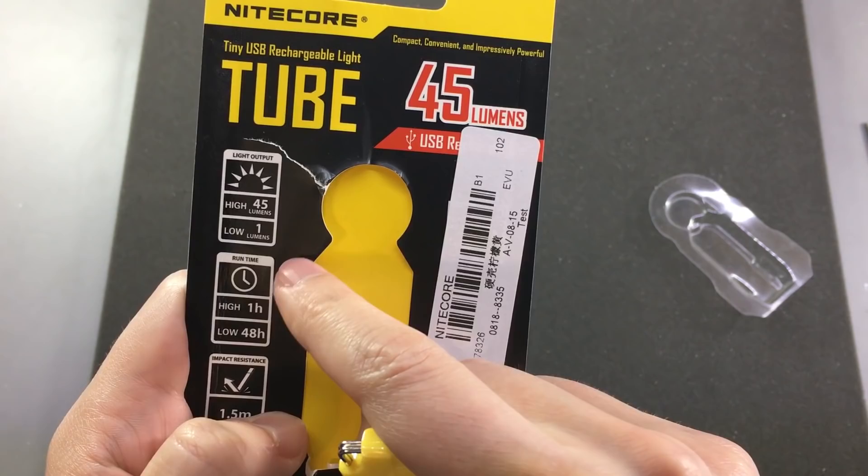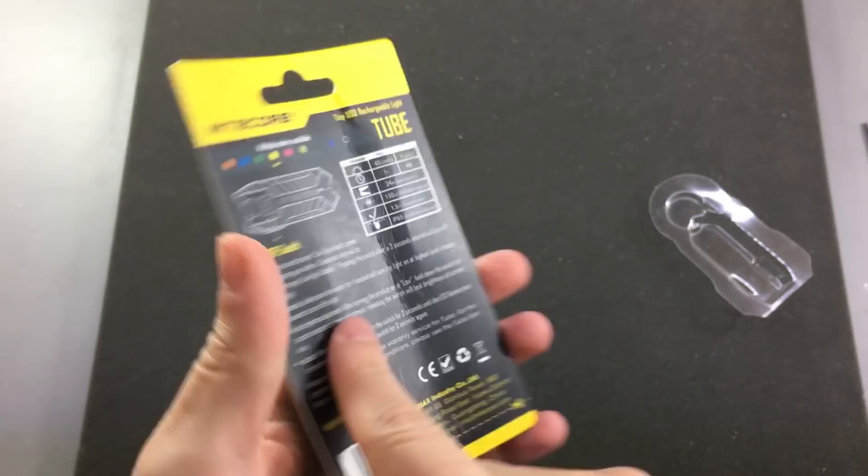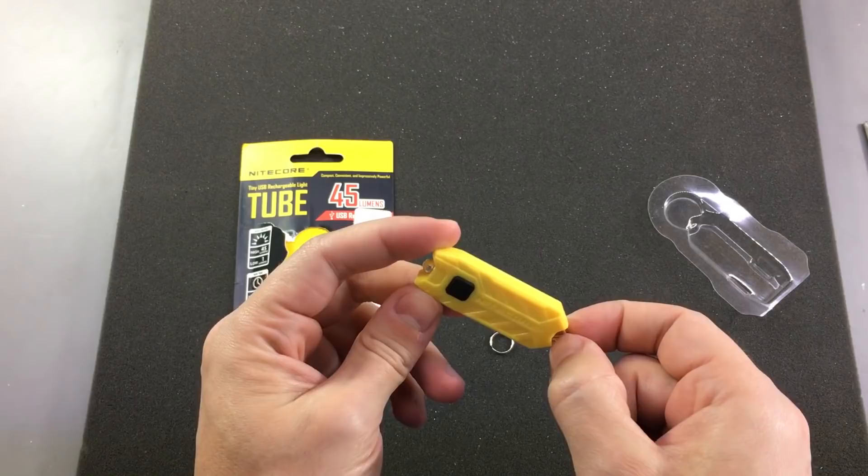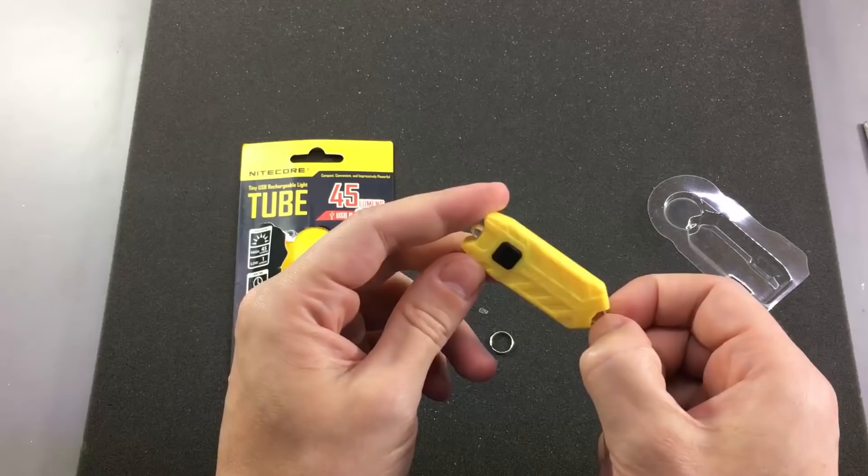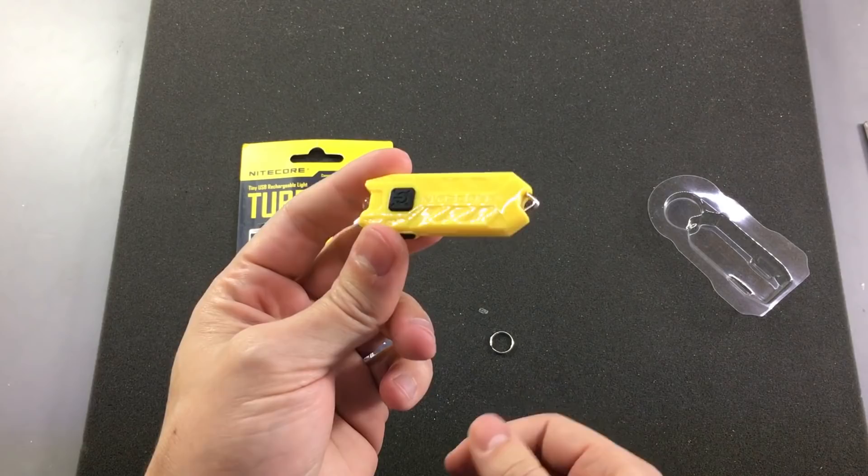And as you can see, it will last one hour on the high setting, 48 hours on the low setting. It's impact resistant and a bunch of other features. The price is around $9 with free shipping. So it's not bad for a keychain light or something to be kept in the purse of the ladies to illuminate the staircase at night.